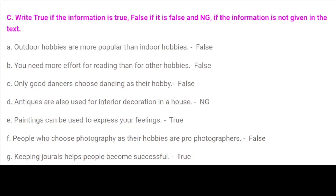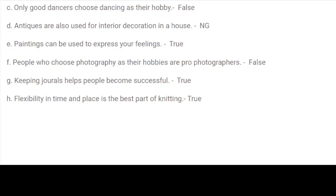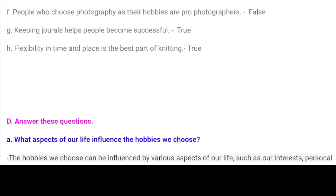Write true if the information is true, false if it is false, and NG if the information is not given in the text. A. Outdoor hobbies are more popular than indoor hobbies — False. B. You need more effort for reading than for other hobbies — False. C. Only good dancers choose dancing as their hobby — False. D. Antiques are also used for interior decoration in a house — NG. E. Paintings can be used to express your feelings — True. F. People who choose photography as their hobby are pro-photographers — False. G. Keeping journals helps people become successful — True. H. Flexibility in time and place is the best part of knitting — True.